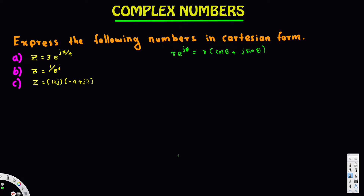Hey, what's going on guys? Let's look at this problem. The question is asking us to express the following numbers in Cartesian form. We have three parts. The first part is z equals 3e^(j·5π/4). This form is a polar form and we are going to convert it into Cartesian form, or in other words, rectangular form.